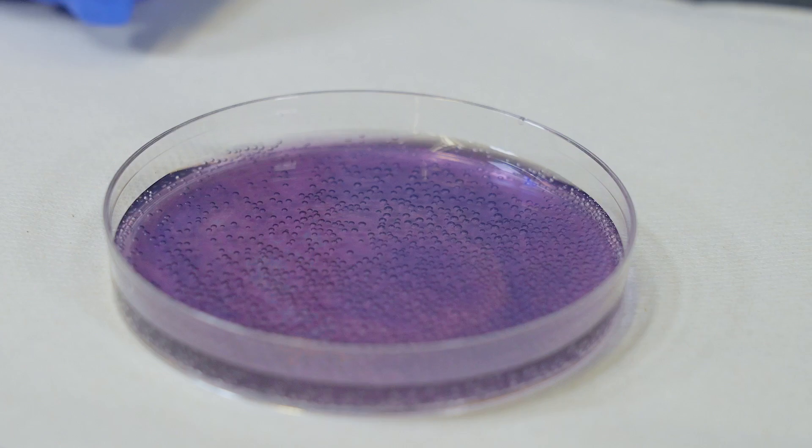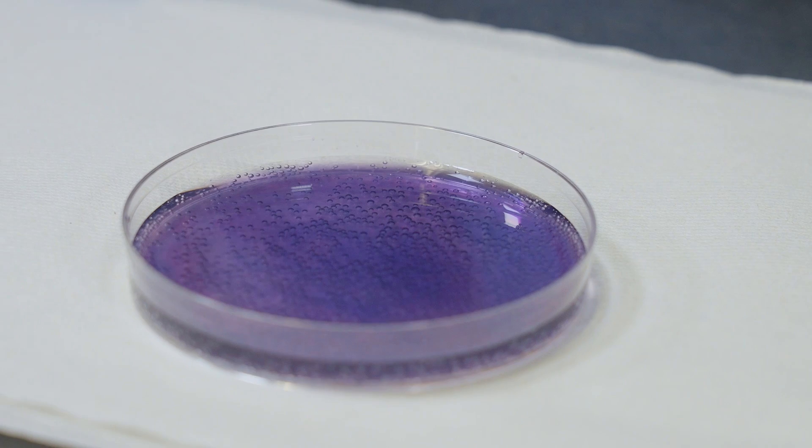And the oscillation is the formation of iodine, I2, reacting with the starch to form a purple color. And then that iodine is actually re-reacting to form a colorless iodide ion.